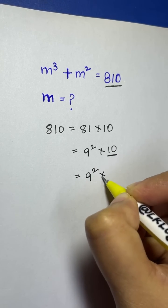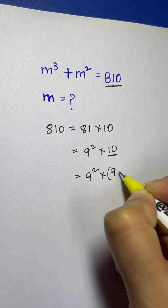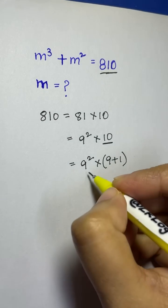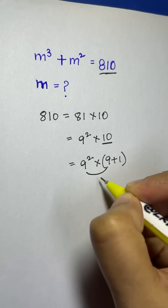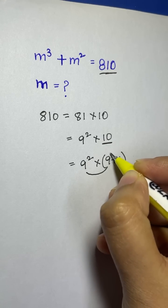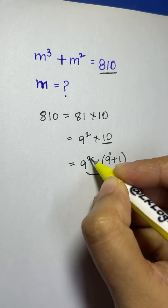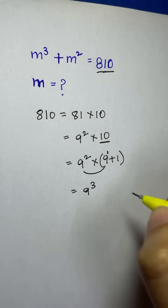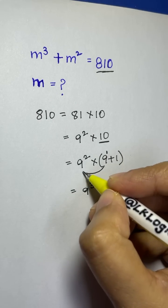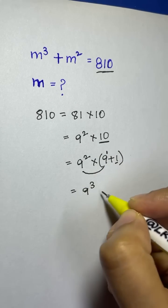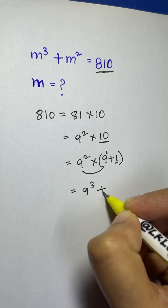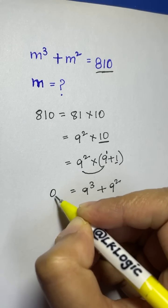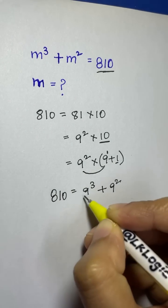Now this 10 can be written as 9 plus 1, so 9 squared times (9 plus 1). Let's multiply: 9 squared times 9 — when you have the same base you add the powers, so 2 plus 1 gives you 9 cubed. Then multiply 9 squared with 1, so you have 9 cubed plus 9 squared.